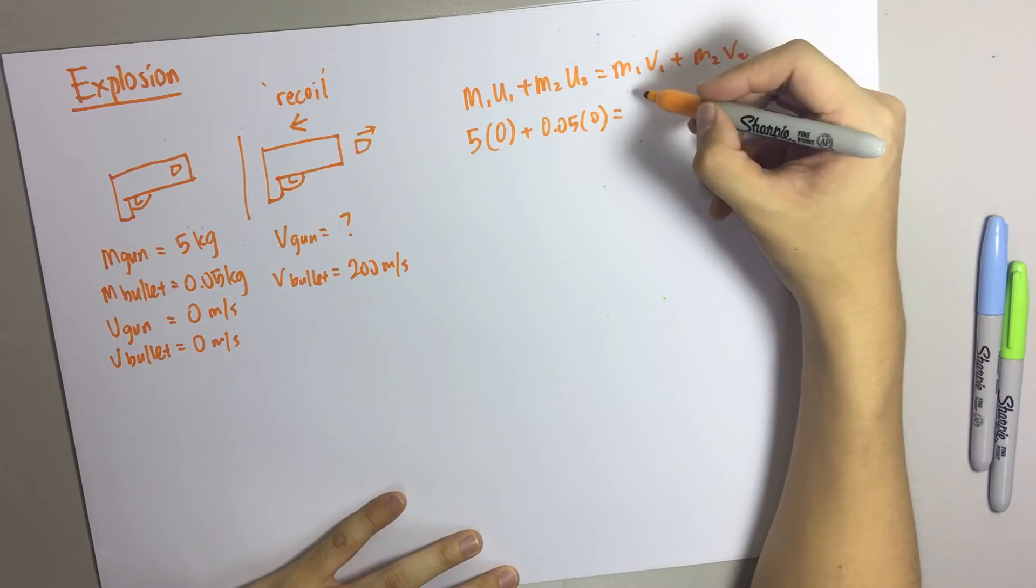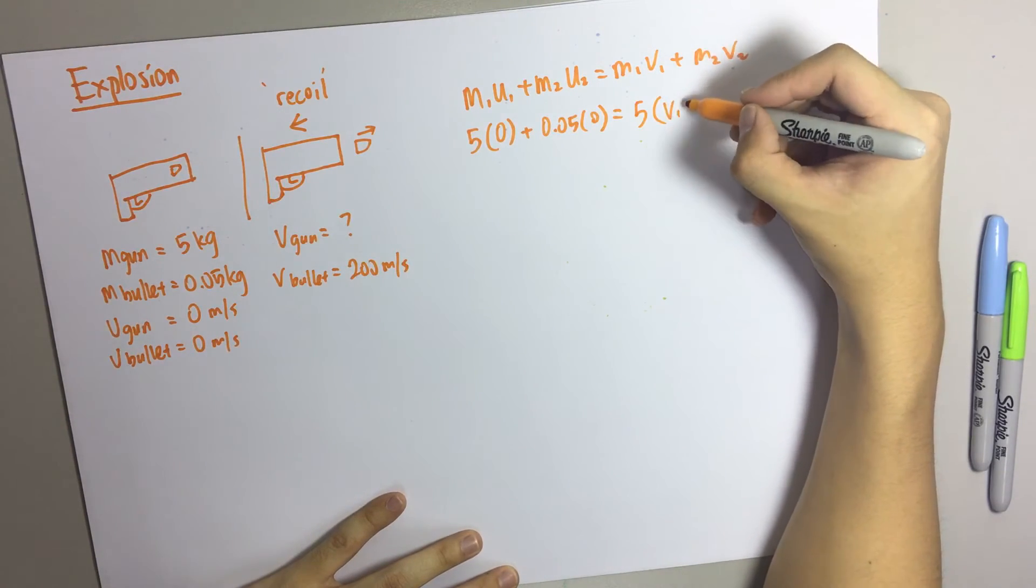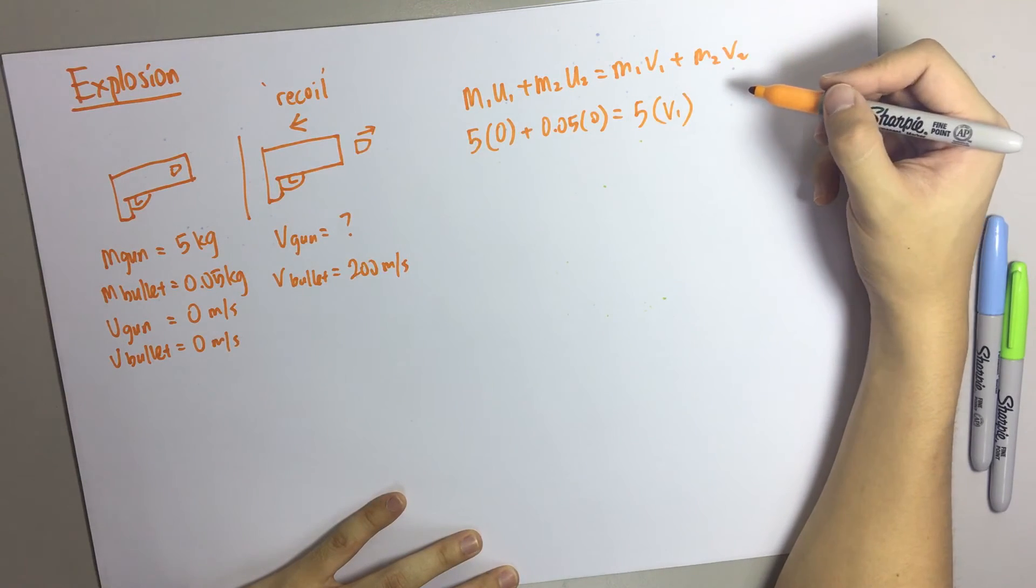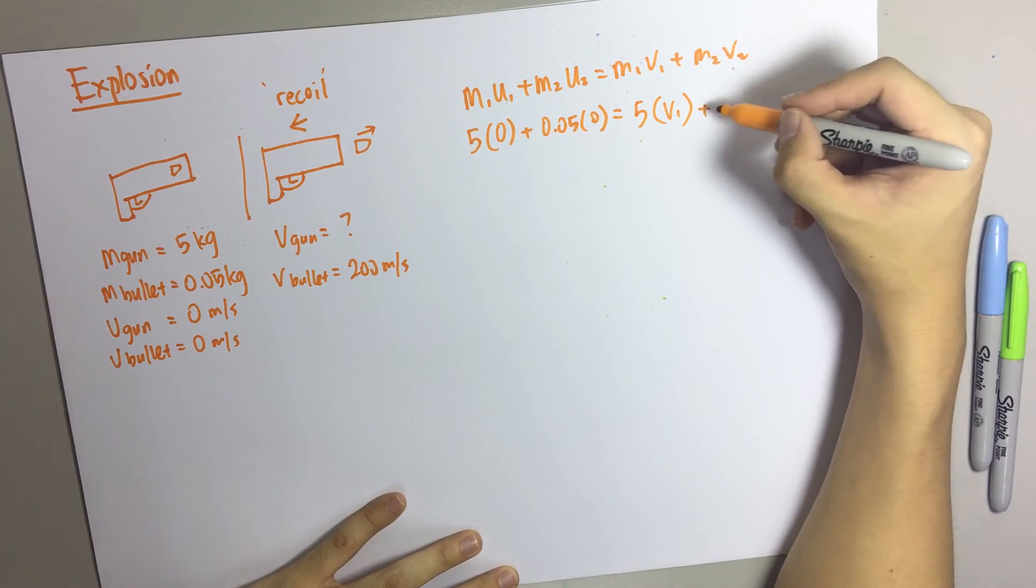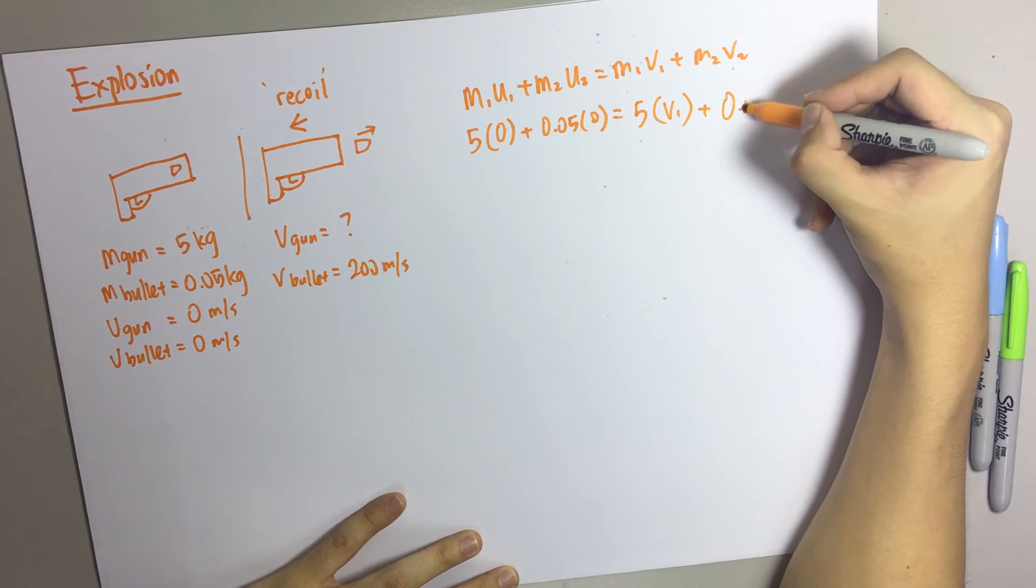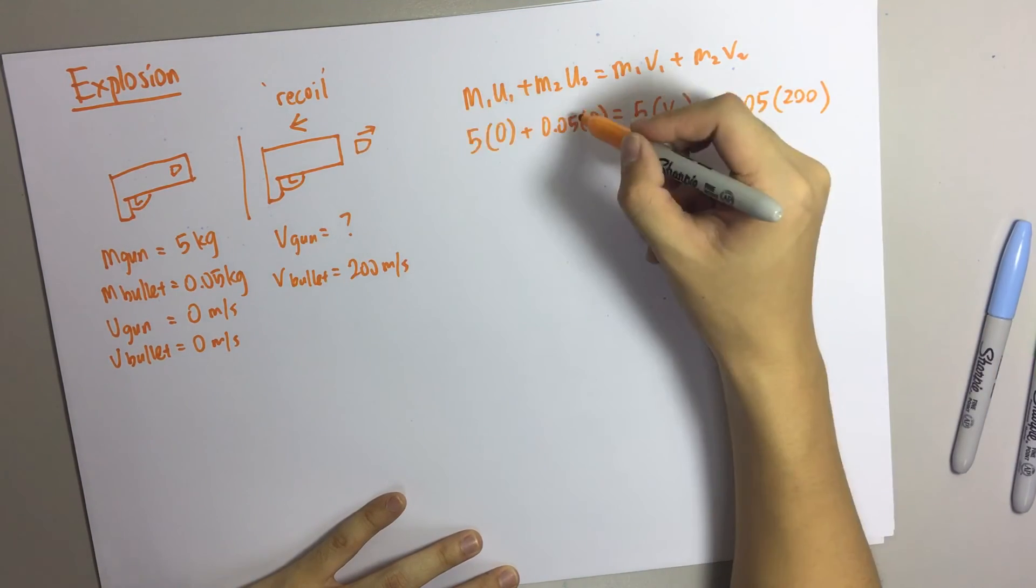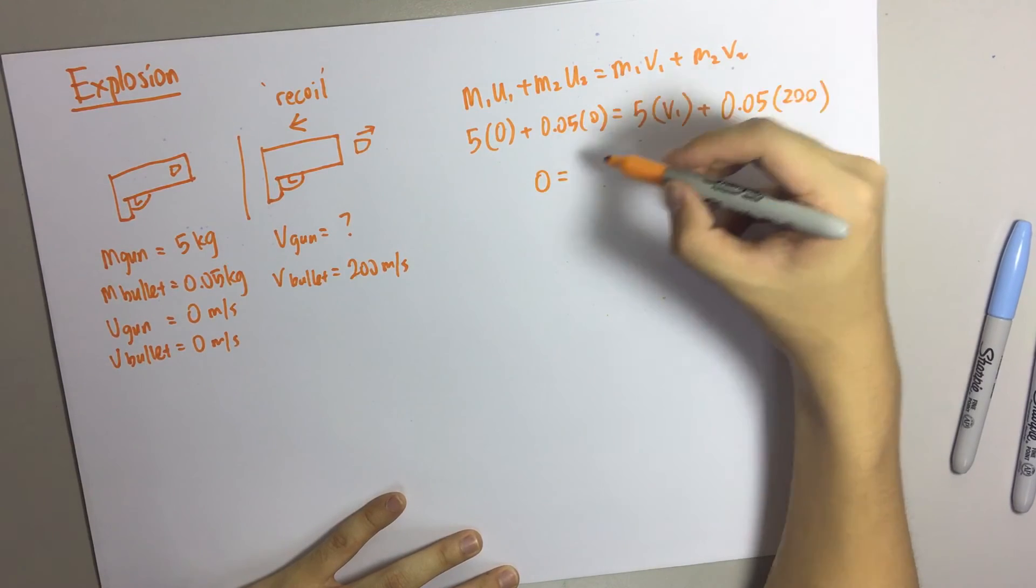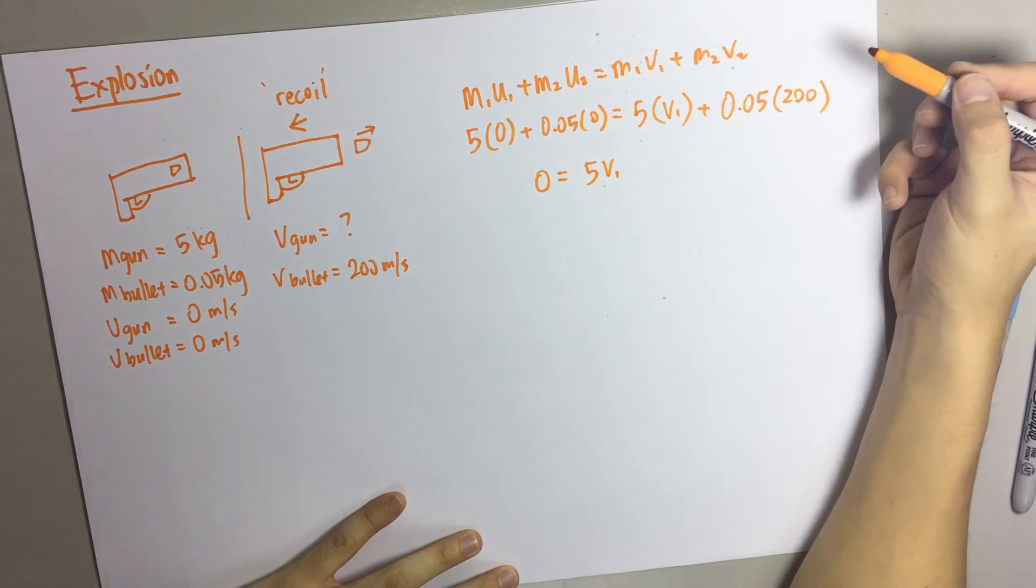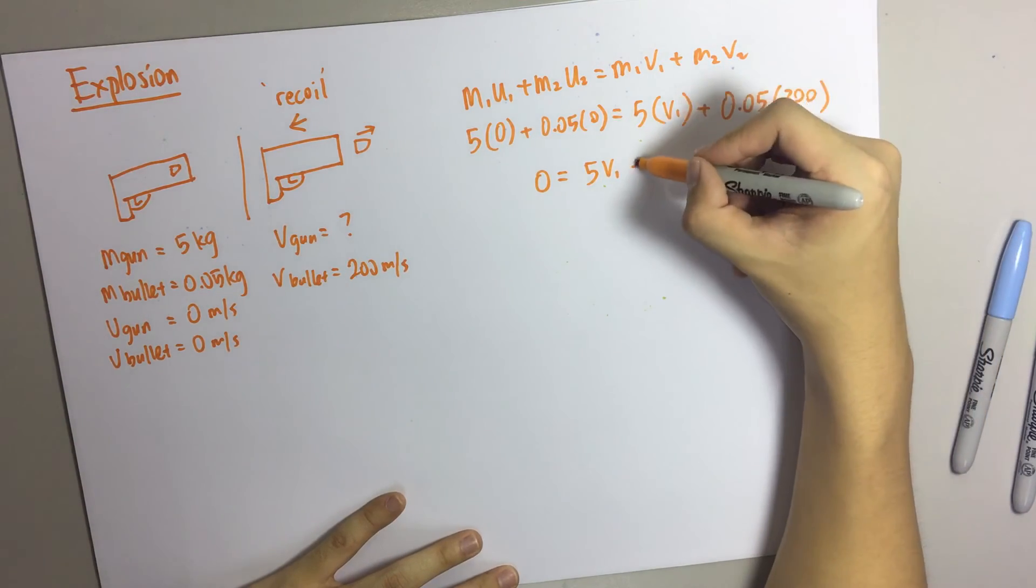After that, it will be here. You are finding the mass for the gun, velocity of the gun. And then this is 0.05 and 200. So here, total will be still 0. Here is V, 5.